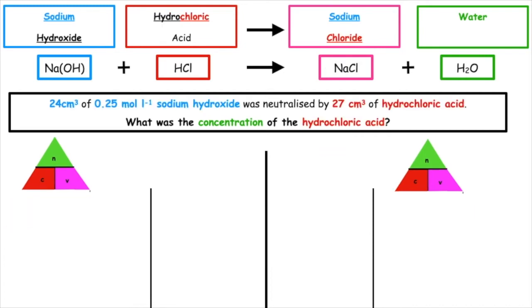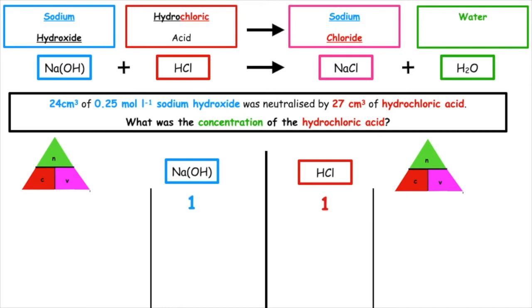Here's the second example. If we have 24 cm³ of 0.25 mol/L sodium hydroxide and it was neutralised by 27 cm³ of hydrochloric acid, what is the concentration of the hydrochloric acid? The first step is to take our entities down from the balanced equation: NaOH and HCl. We then do our mole ratio — there's no number directly in front of either of them in the balanced equation, so the ratio is 1 to 1. The question wants us to calculate the concentration of the hydrochloric acid.